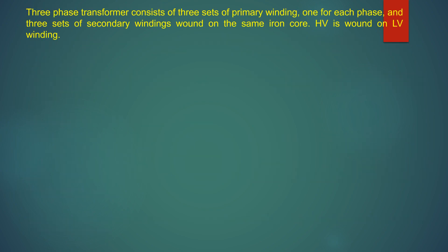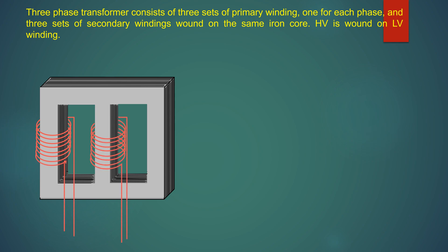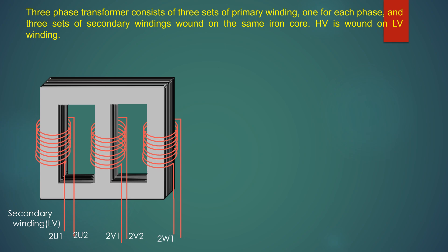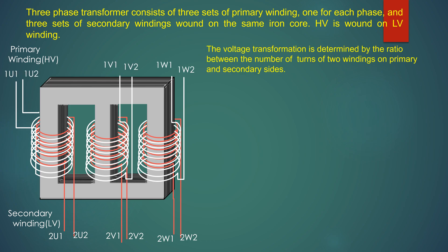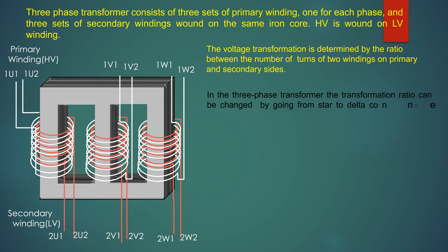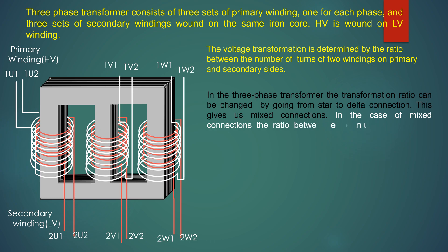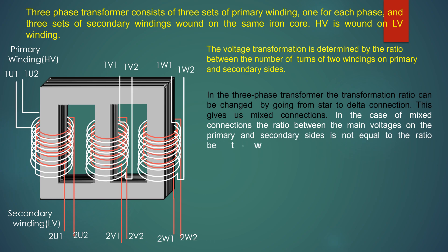A three-phase transformer consists of three sets of primary windings, one for each phase, and three sets of secondary windings wound on the same iron core. The HV winding is wound over the LV winding. The voltage transformation is determined by the ratio between the number of turns of the two windings on the primary and secondary sides. The transformation ratio can be changed by going from star to delta connection, giving mixed connections where the ratio between the main voltages is not equal to the turns ratio.